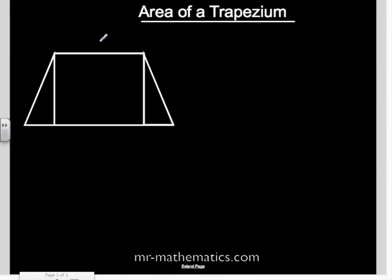We are going to derive the formula for the area of the trapezium and we will call the two parallel sides A and B and the perpendicular height we will call H.